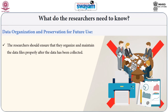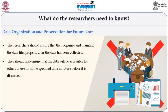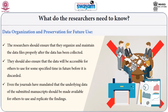The third aspect is data organization and preservation for future use. Researchers should ensure that they organize and maintain data files properly after data has been collected. They should also ensure that the data will be accessible for others to use for some specified time in the future before it is discarded. Even journals have mandated that the underlying data of submitted manuscripts should be made available for others to use and replicate the findings.